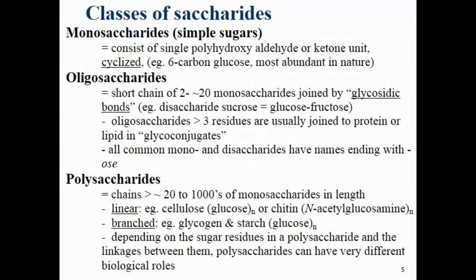Oligosaccharides are short chains consisting of two to twenty monosaccharides, joined together by glycosidic bonds. For example, table sugar — sucrose — is a disaccharide formed of one glucose and one fructose molecule. Oligosaccharides greater than three residues are usually joined either to lipids or to proteins, forming glycoconjugates such as glycolipids or glycoproteins.